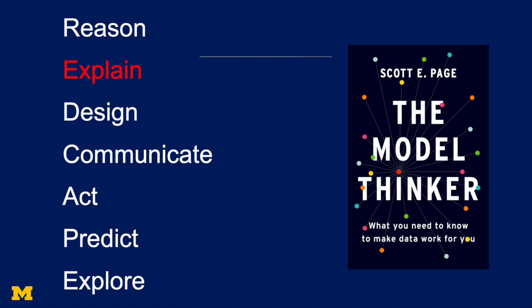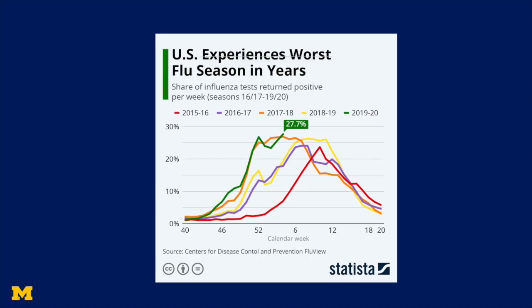Here's where this model becomes so useful. We can use it to explain why we see the patterns that we see. If we look, for example, with flu or any other disease, we see this familiar pattern that starts out slow, gets really fast, and then tapers off.